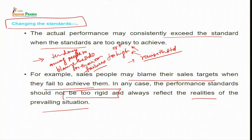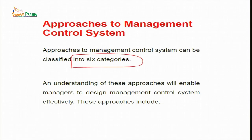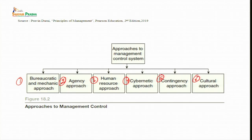This was the process of controlling in the organization. Now let us discuss approaches to management control systems. These approaches are classified into six categories: bureaucratic or mechanic approach, agency approach, human resource approach, cybernetic approach, contingency approach, and cultural approach. Understanding these approaches will enable managers to design management control systems very effectively.